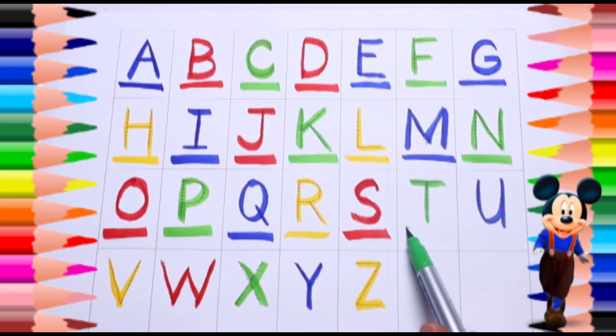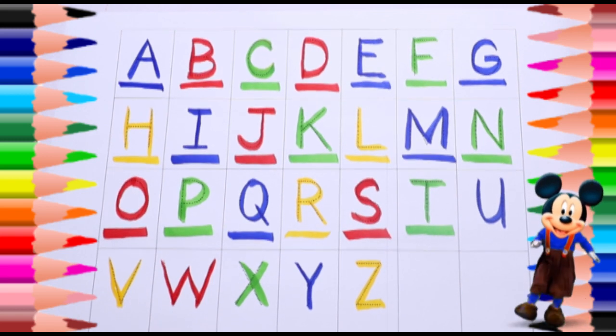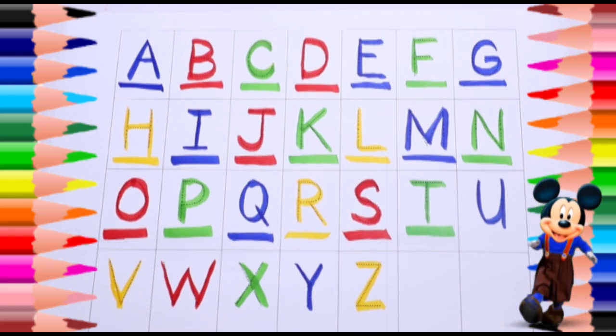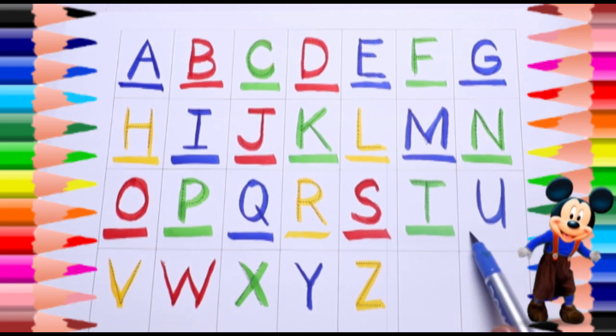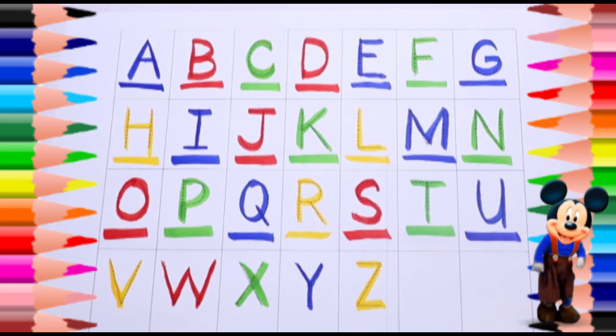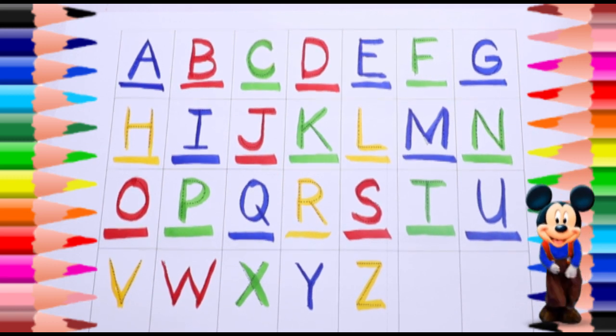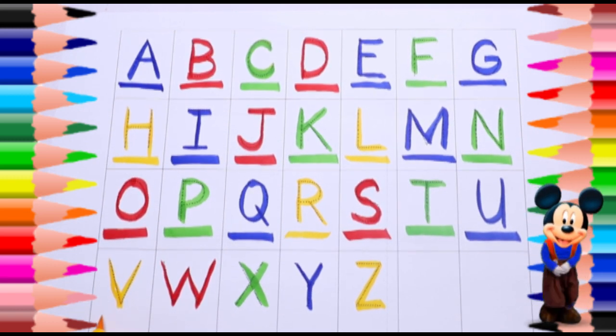T, green color. T for train. U, blue color. U for umbrella. V, yellow color. V for...